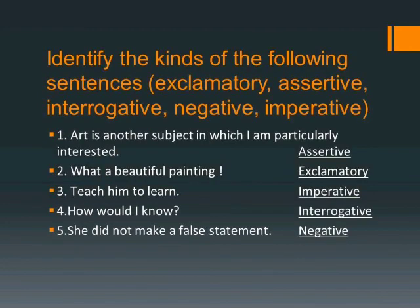Identify the kinds of the following sentences — assertive, exclamatory, interrogative, negative, or imperative. 'Art is another subject in which I am particularly interested' — it is an assertive sentence. 'What a beautiful painting!' — it is exclamatory. 'Teach him to learn' — it is imperative because it is an order. 'How would I know?' — the question mark makes it interrogative. 'She did not make a false statement' — it is negative.